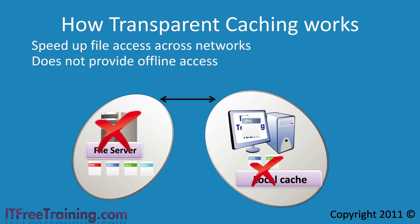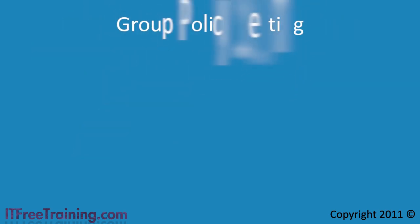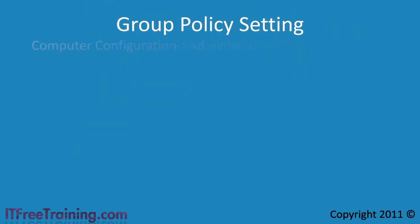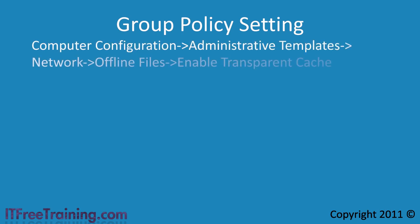Transparent caching is not enabled by default and it needs to be enabled using group policy before you can use it. To do this, you need to configure the group policy setting 'Enable Transparent Cache', found in Computer Configuration, Administrative Templates, Network and Offline Files.